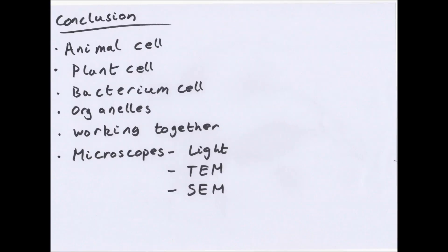So in conclusion, three main types of cells you need to know about at this stage: animal cells, plant cells, and bacterial or prokaryotic cells. You can know about all the different organelles, what they look like so you can see them in a picture, and what they do. You can know how organelles work together, in particular that example of packaging and processing of proteins.